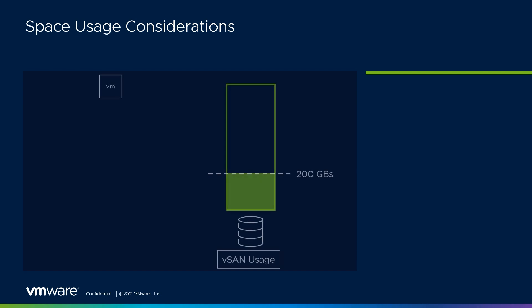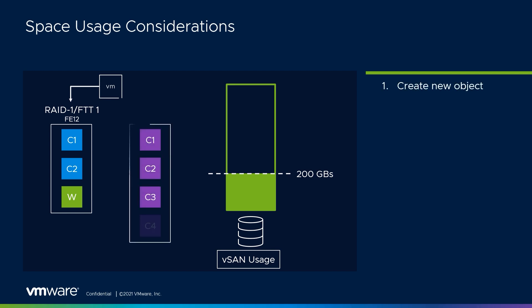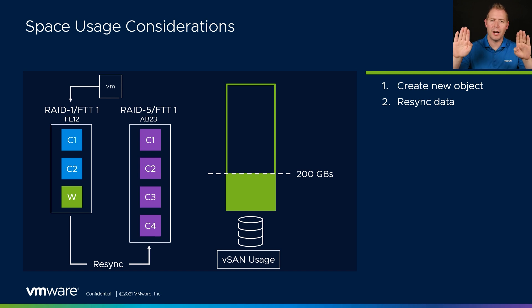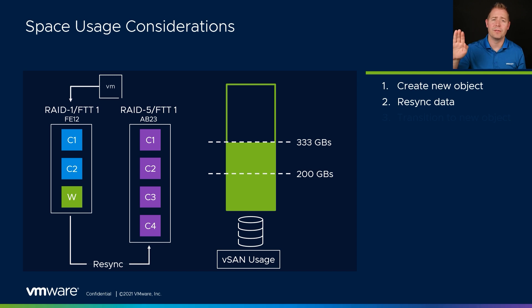I want to go just a little bit deeper before we wrap up. I want to talk about the storage consumption as we convert from RAID1 over to RAID5. We have our VM using that FE12 VMDK, which is taking up 200 gigs of storage. We then have our RAID5 VMDK — that's our AB23 VMDK. We begin our re-sync process, copying data from our RAID1 object over to our RAID5 object. Since we've got both objects side-by-side, we're using 333 gigs — 200 for our RAID1 object and 133 gigs for our RAID5 object.